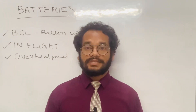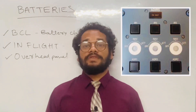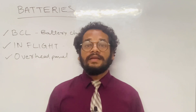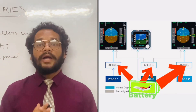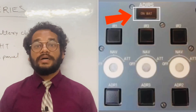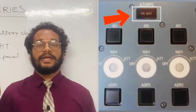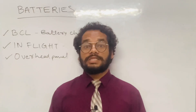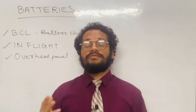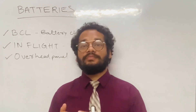Regarding the ADIRS — Air Data Inertial Reference System — if the aircraft battery is supplying electrical power to any one of the three ADIRS units, the ON BAT indicator comes on on the ADIRS control panel. During a complete IRS alignment, the ON BAT indicator comes on for a few seconds, but it does not come on during a fast alignment of the IRS.